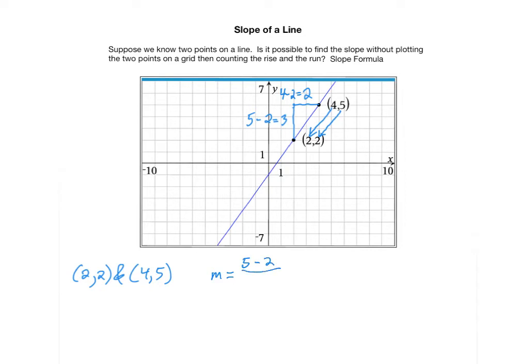So our vertical rise can be found by subtracting the y coordinates, 5 minus 2. And the run, or horizontal distance, can be found by subtracting the x coordinates, 4 minus 2. 5 minus 2 gives us 3, 4 minus 2 gives us 2. So the slope is three halves.